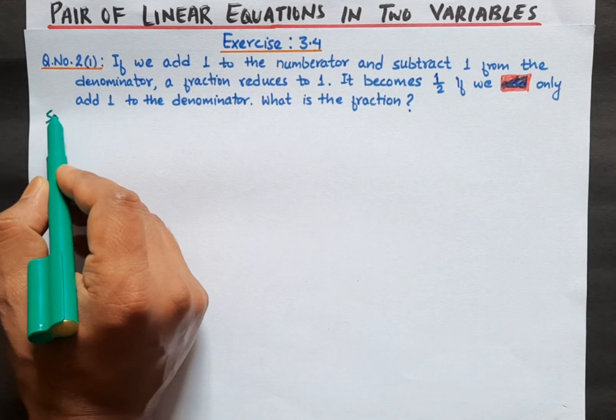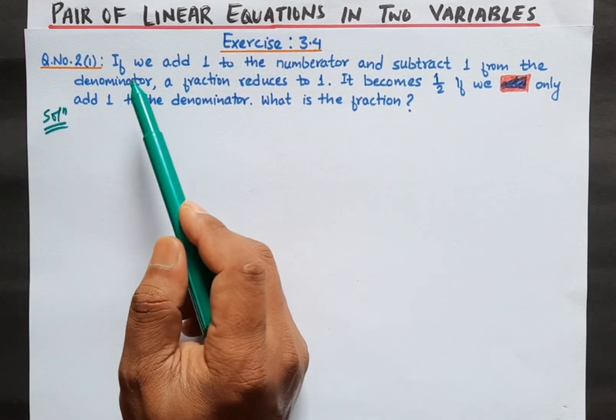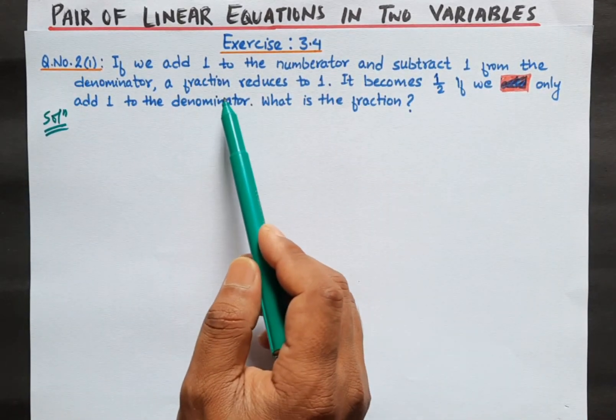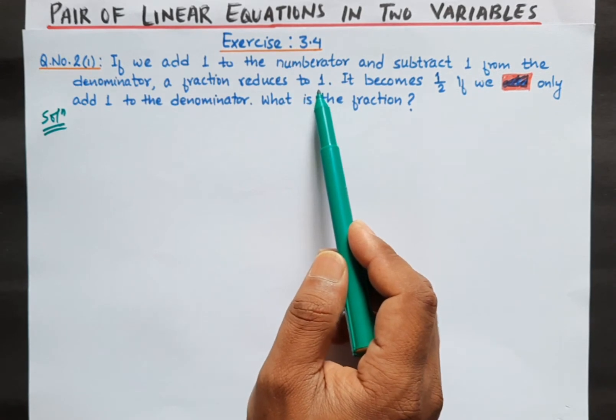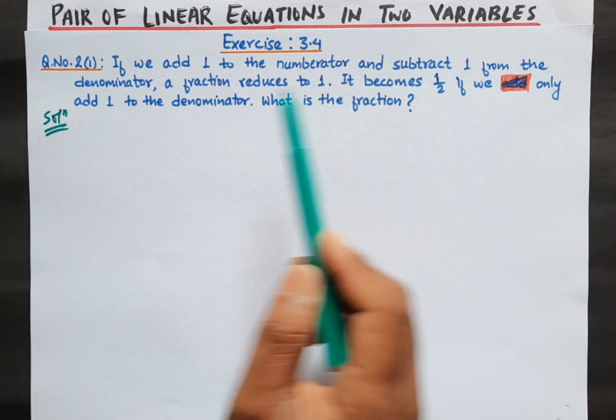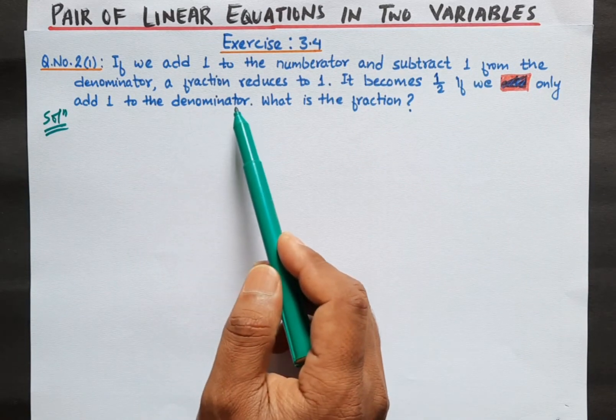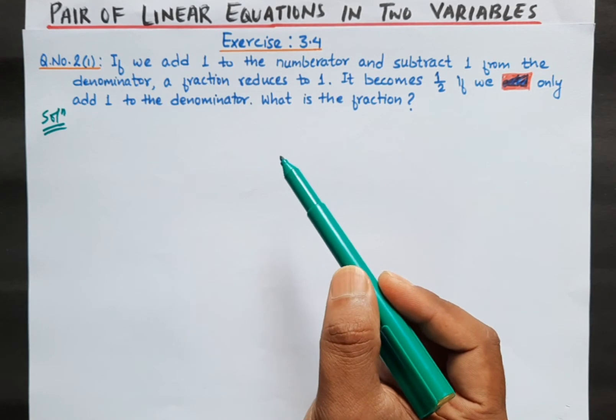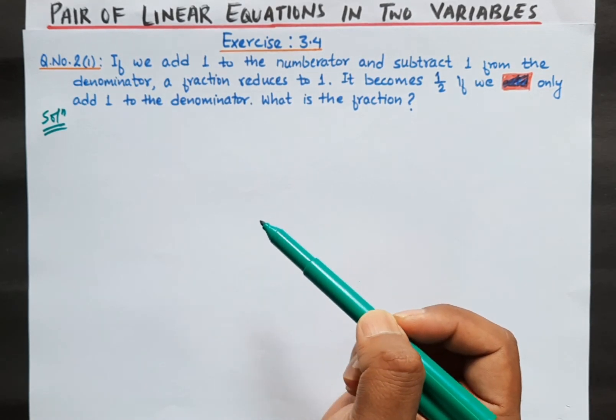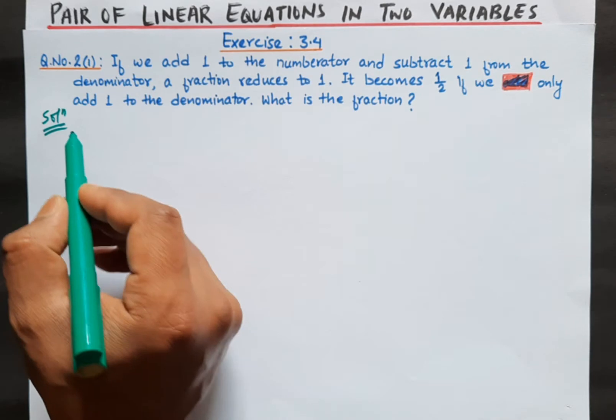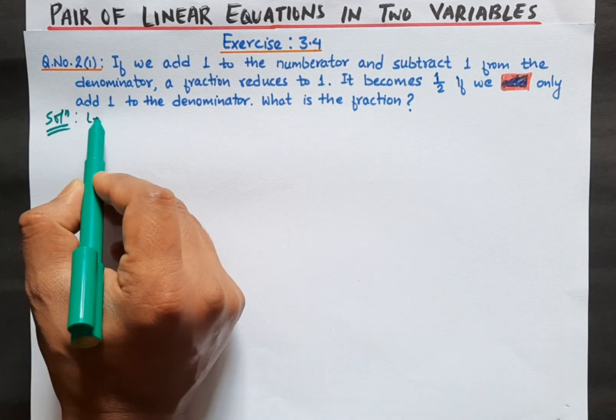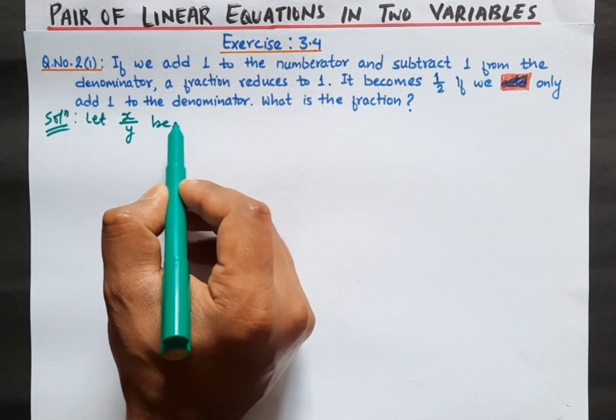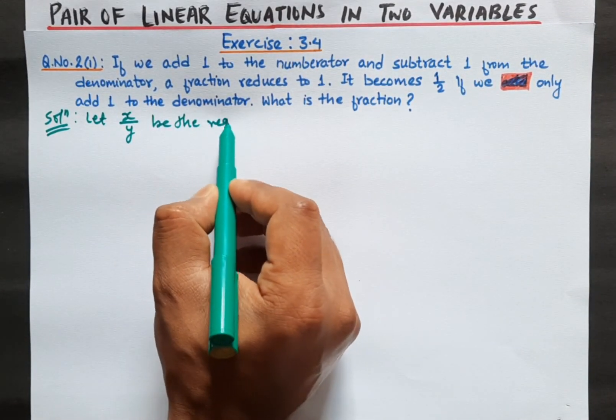Let's start the solution. The question is: if we add 1 to the numerator and subtract 1 from the denominator, a fraction reduces to 1. It becomes 1 by 2 if we only add 1 to the denominator. What is the fraction? We need to find out the fraction, which has a numerator and denominator. So let x by y be the required fraction.